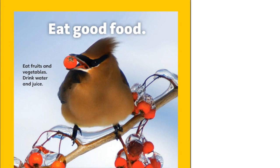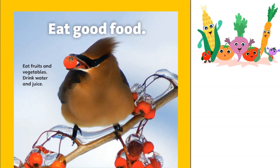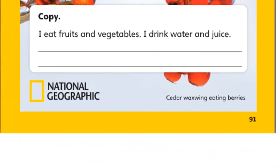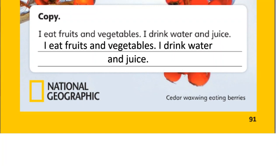It says, eat fruits and vegetables. Drink water and juice. Now it's time to read and copy. Repeat after me: I eat fruits and vegetables. I drink water and juice. Okay guys, you are going to copy the sentence here. Take out your pencil and copy the sentence please.